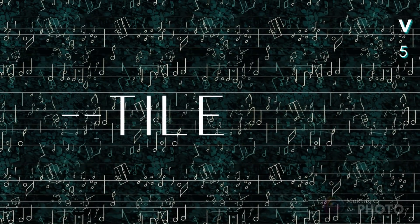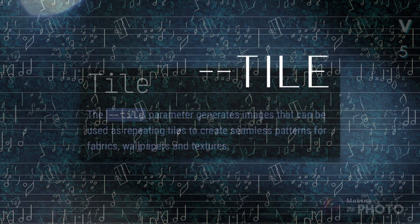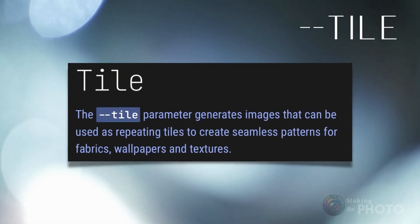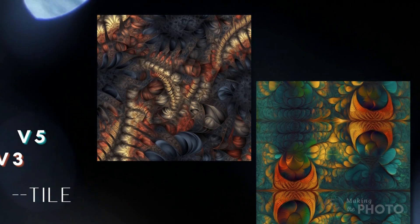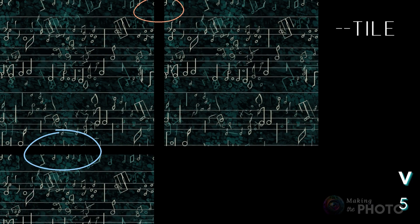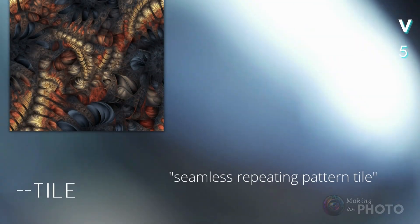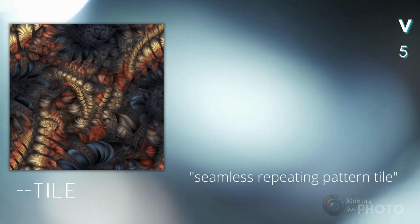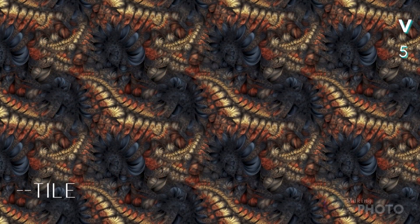The tile parameter is making a comeback in version 5. Type --tile after your prompt and you'll get a fantastic repeating pattern. The --tile parameter is perfect for crafting backgrounds, skin textures, and even print or fabric designs. The patterns in V5 seem a bit busy, but they're working just as intended. The success of a pattern is how well it repeats — when the parameters align, the tile edges disappear and blend together. You can add 'seamless repeating pattern tile' to your prompt, but the tile parameter should do the trick.